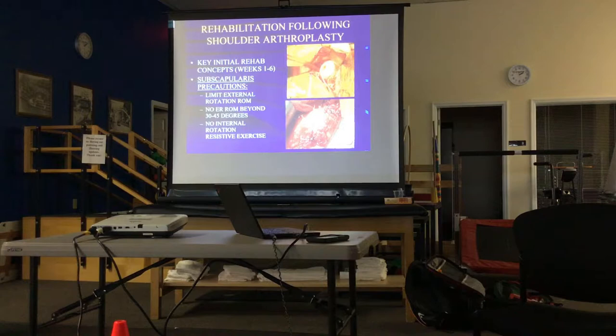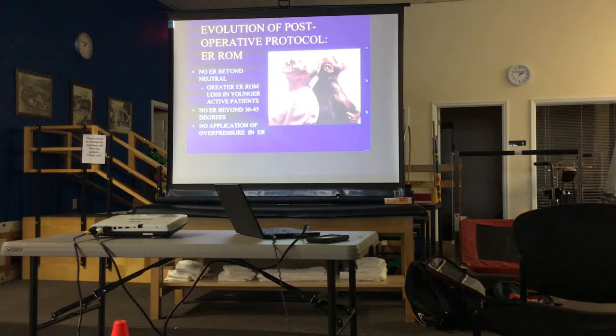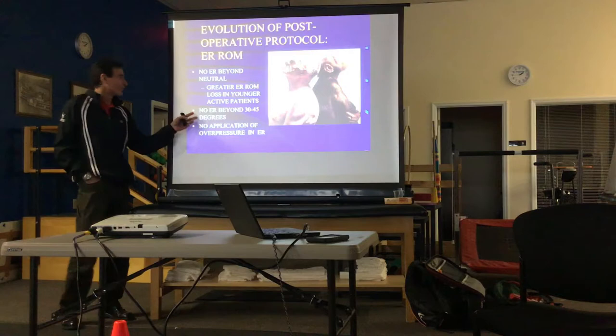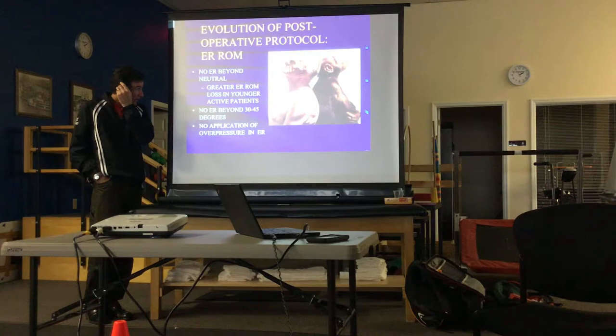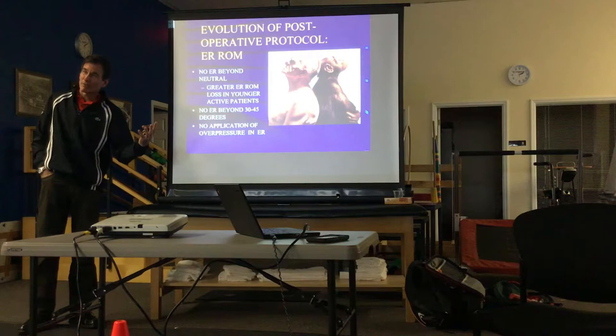The protocol has evolved. Dr. Bailey used to say no external rotation beyond neutral, but we found that young, active patients just weren't getting their ER back. So he started allowing 30 to 45 degrees in the first six weeks, which led to a very appreciable increase in external rotation range of motion and better outcomes. Looking at the literature, there are all different types of limitations — some allow no ER, some say 30 to 40 degrees, and Gerber's study kept everyone neutral for six weeks.